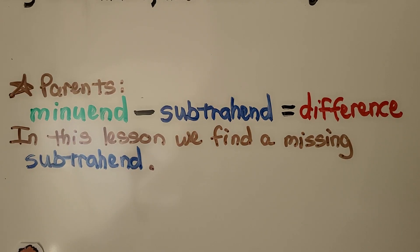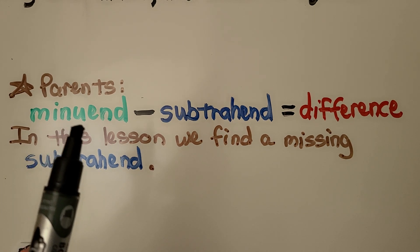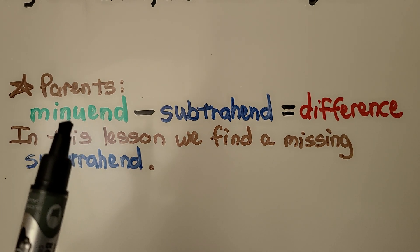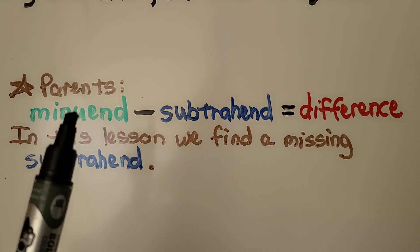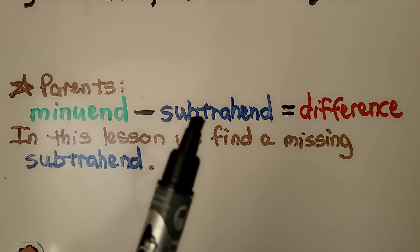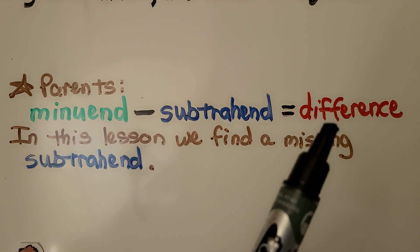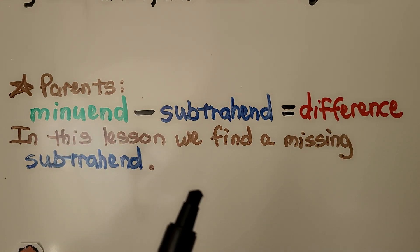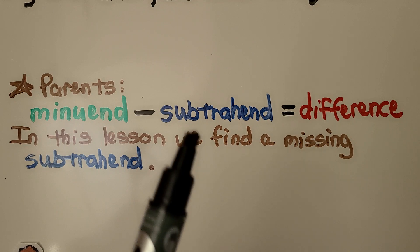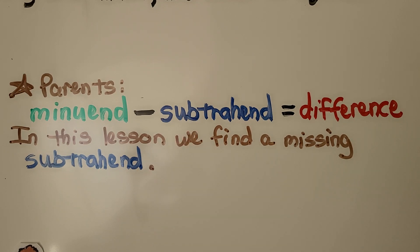A quick message for the parents. The first number in a subtraction equation is the minuend, minus the subtrahend, and it's equal to the difference. In this lesson, we find a missing subtrahend.